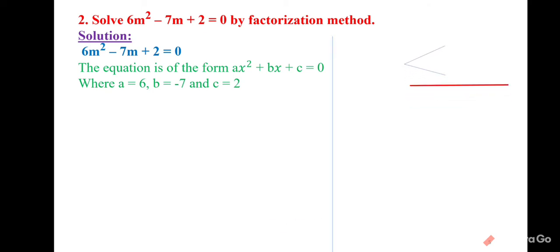We check a × c = 6 × 2 = 12, and b = −7. We need two numbers whose product is 12 and whose sum is −7. Trying 6 and 2: 6 − 2 = 4, not getting it. Trying 4 and 3: 4 + 3 = 7. With signs −4 and −3: (−4)(−3) = +12 and (−4) + (−3) = −7. Both conditions are satisfied.